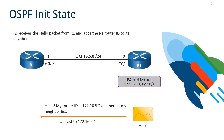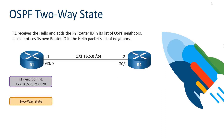When we get a hello back, we stay in the init state because we have seen someone else on this OSPF-activated link — we've received a hello from R2. R2 has also added information into its message saying it has a new neighbor, R1, with IP address 172.16.5.1, existing off of its interface Gig0/1. When R2 sends its hello back as a unicast targeting 172.16.5.1, R1 sees itself in R2's neighbor list and we transition to the two-way state.